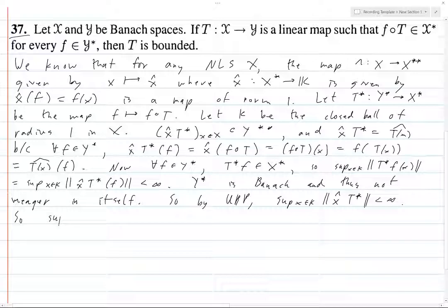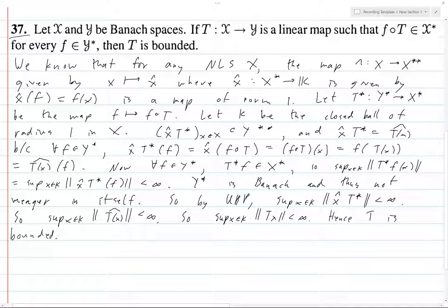So then what? But then this is precisely x̂T*, which is precisely T∘x̂, so this is finite. So supremum over x in K of T of x̂(x) is finite because the map that sends x to x̂ is a linear isometry. So hence, because the supremum is finite, T is bounded. And this completes the proof.